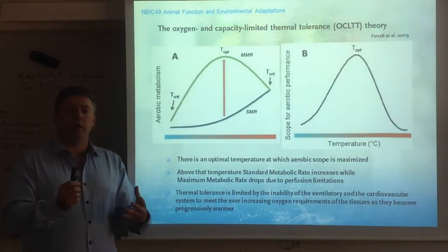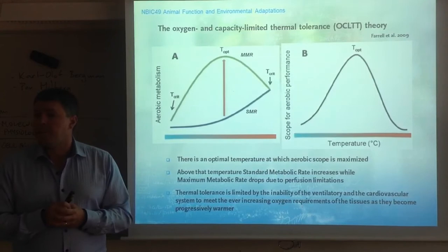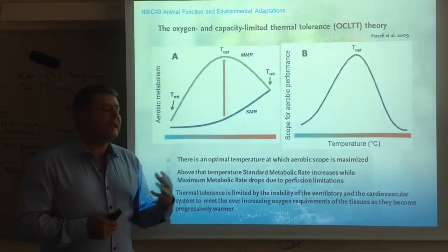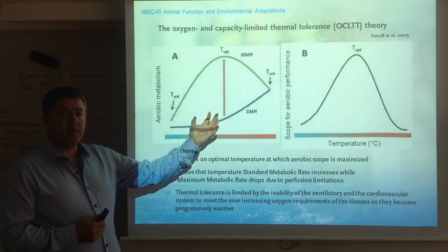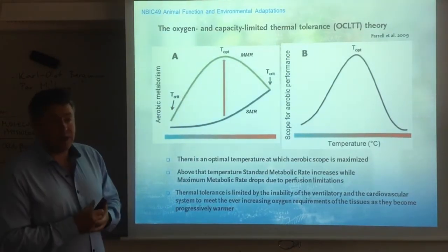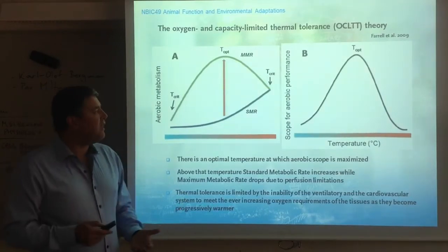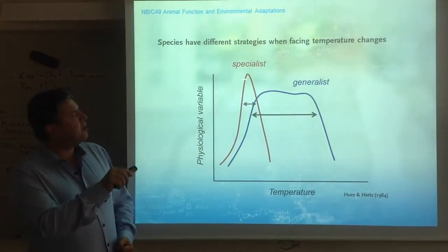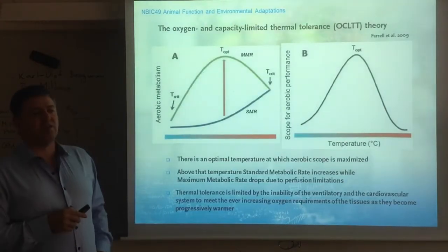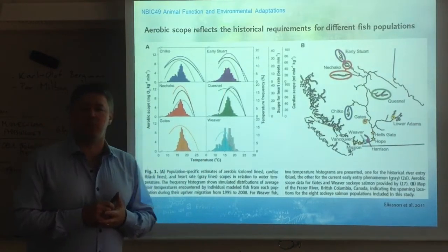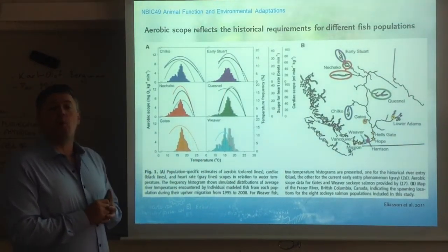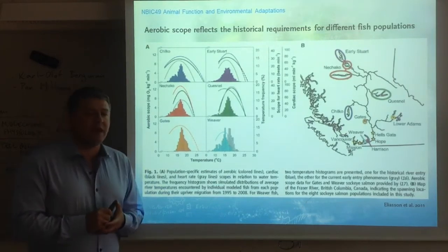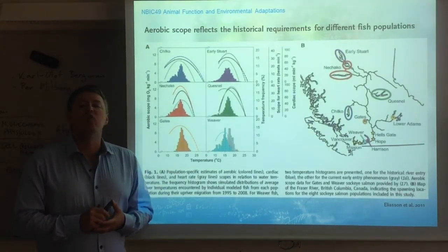The OCLTT theory has been a very fruitful framework for discussing the effects of global warming. If the oceans are warming up, we can try to predict how different species may be affected by measuring their aerobic scope. Generalist animals will do fine unless pushed too high, but specialists may do less well. There is evidence for and against this theory — I'll present mostly evidence for it, though mounting evidence in recent years suggests it may not be universally applicable.